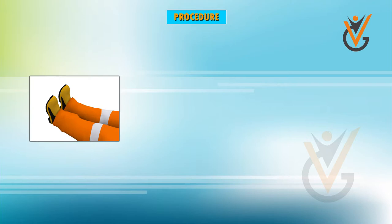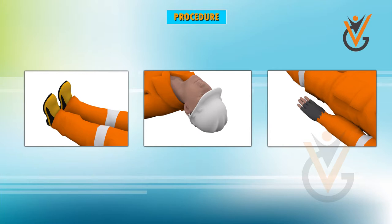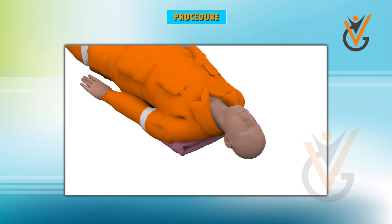Procedure: Remove the shoes, helmet, gloves, and foreign materials from the pockets. Lay the patient on his back on a firm surface. Raise his shoulders on a cushion or folded jacket, or in some other way, with head fully back. Shoulders should be raised on rolled clothing.